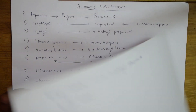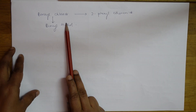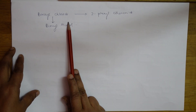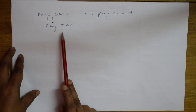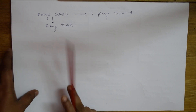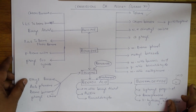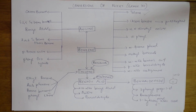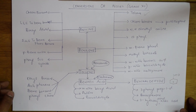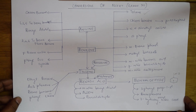One more aromatic conversion is benzyl chloride — benzyl chloride to 2-phenylethylamide, and benzyl chloride to benzyl alcohol. So these are all the aromatic conversions we have. Please note them and keep them. Now let's come back and do aliphatic conversions.